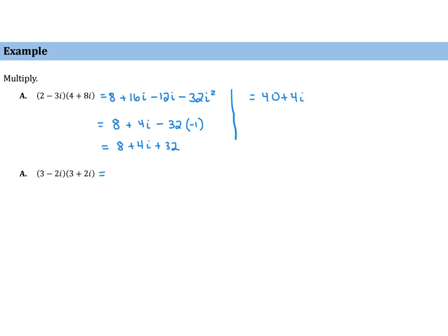3 minus 2i times 3 plus 2i. If we foil that out, it's a lot like a difference of squares. We would get 9, then the outside and inside would add out, minus 4i squared. So, we have 9 minus 4 times negative 1. That's 9 plus 4, which is 13.